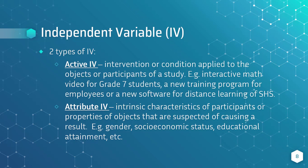Attribute IV, on the other hand, are intrinsic characteristics of the participants or properties of the study objects that are suspected of causing a result. For example, if you are examining whether the gender of the participants affects their scores in some skills, then gender is an attribute IV here, since it is a characteristic known to all participants.